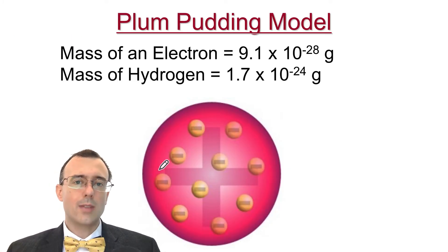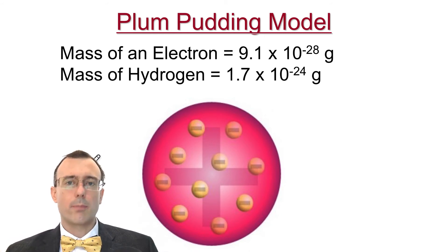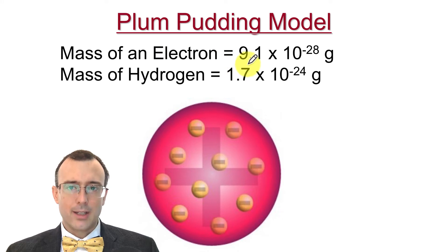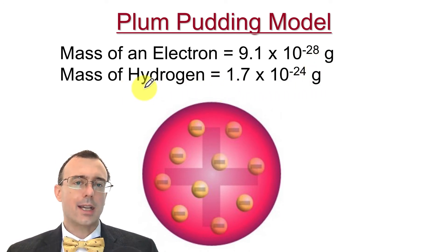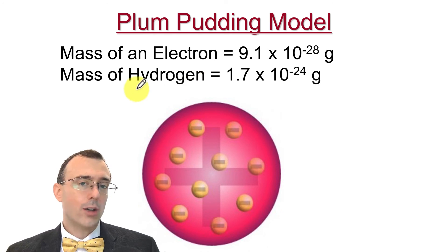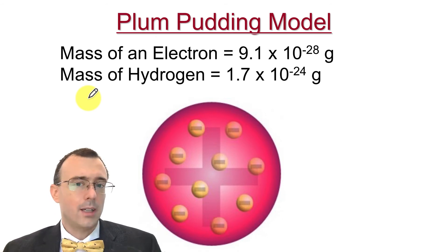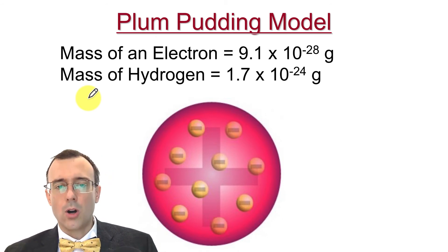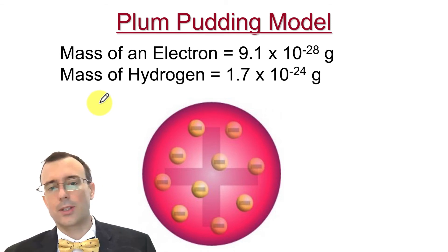He was able to get a very accurate measurement of the charge of an electron, which enabled him to also calculate the mass of an electron. People used that information to think about the atom. The mass of an electron is 9.1×10⁻²⁸ grams, and the mass of the lightest hydrogen atom is 1.7×10⁻²⁴ grams — an electron is nearly 2,000 times lighter than the lightest atom. People concluded that electrons must be really small and that most of the mass of the atom is a positively charged mass that balances out the negative charge of the electrons.